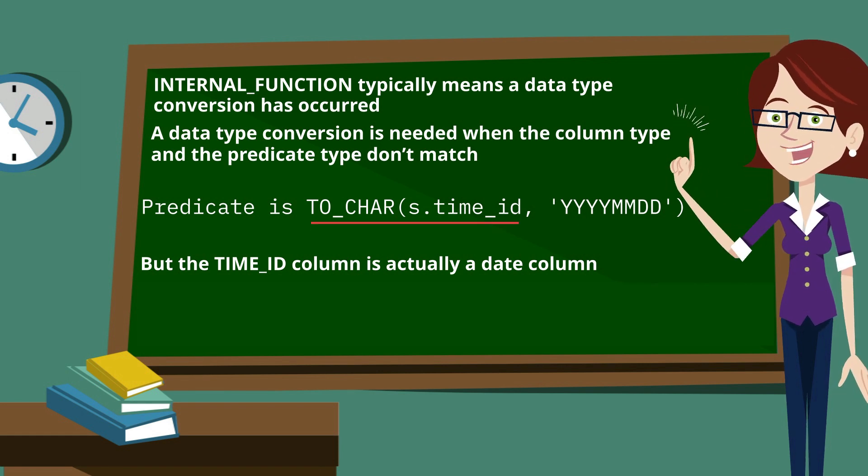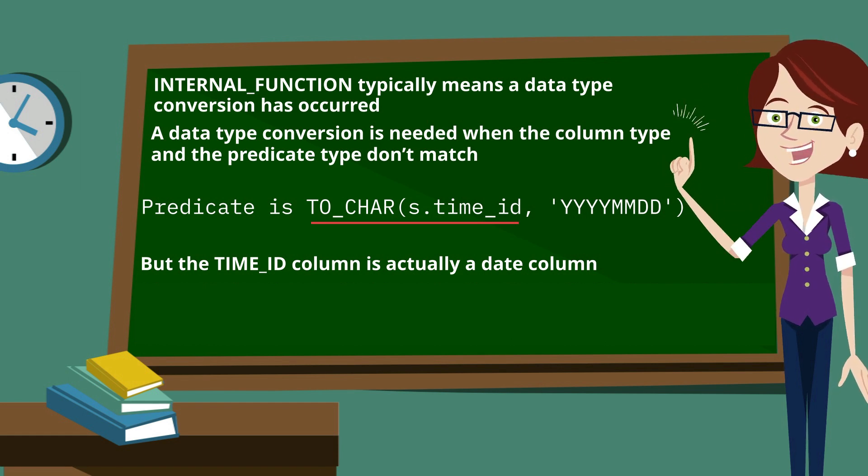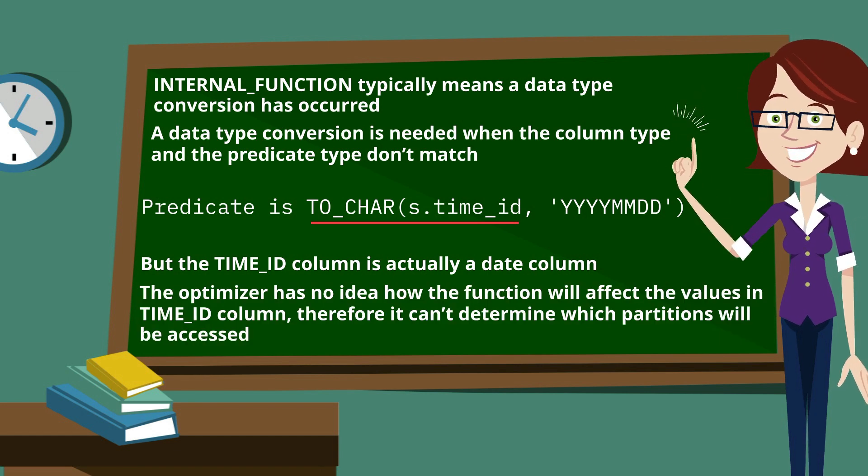And unfortunately, by wrapping the to_char function around the time_id column, the optimizer has no idea how that function will affect the values inside the column, and therefore can't determine which partitions need to be accessed.